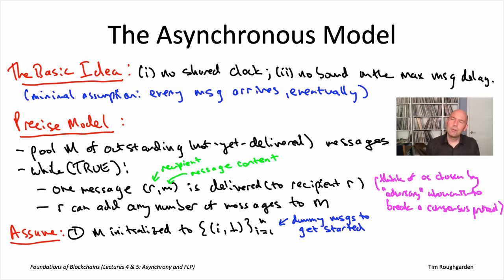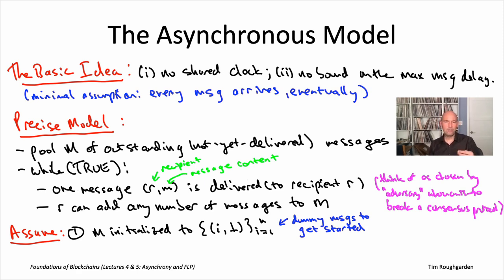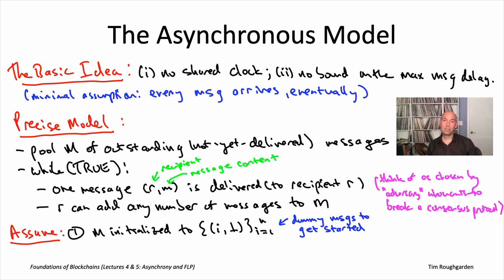You might object that this only ensures each node gets one chance to speak. But that's easy to fix inside the protocol itself: we'll assume that any protocol, whenever a node that hasn't halted yet receives a message, always injects at least one dummy message back to itself into the message pool. When that dummy message is delivered later, it gives that node yet another chance to speak. This can be done generically inside the protocol code, so we won't worry about it further.